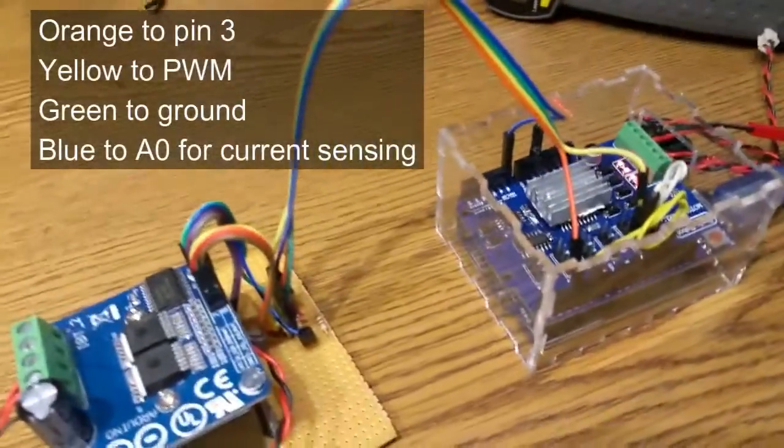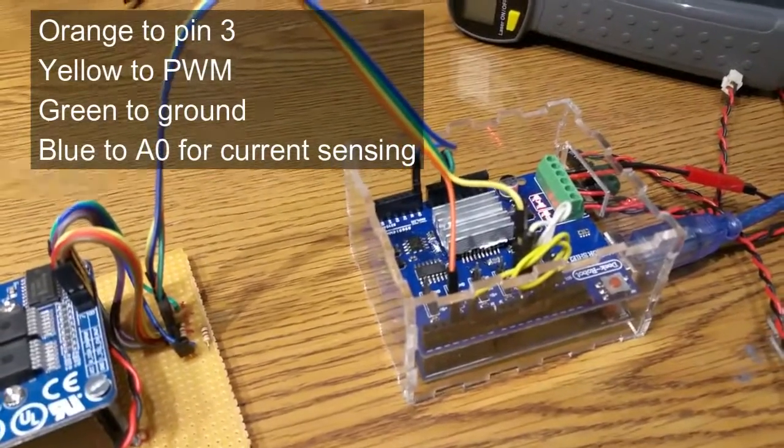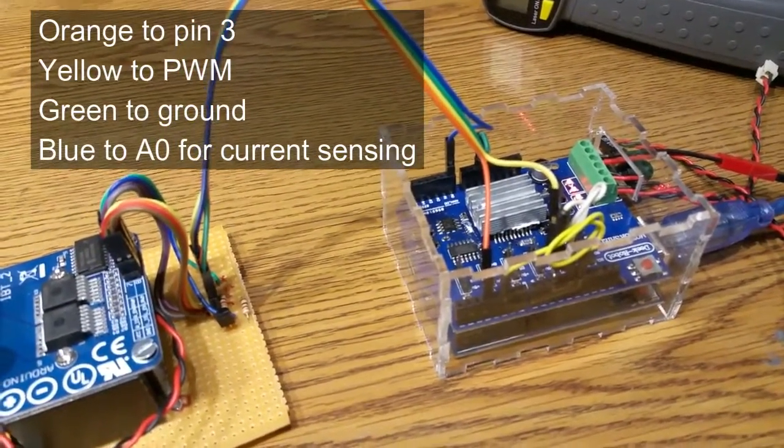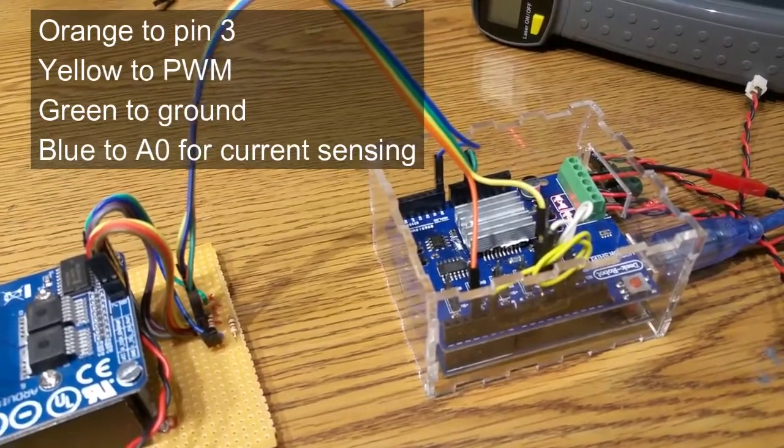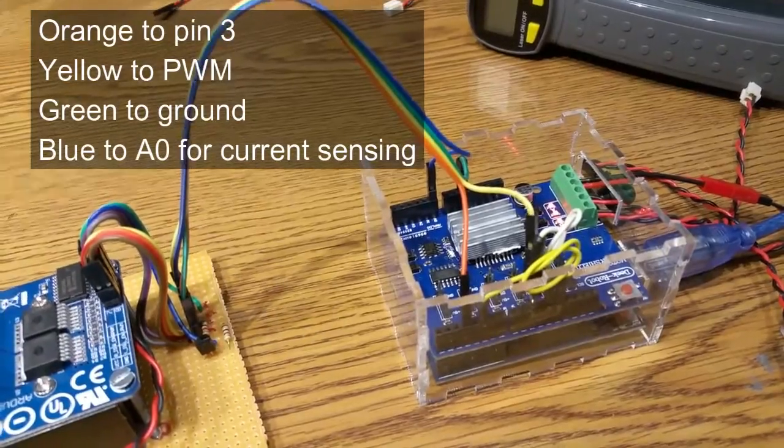There are only four wires connecting the H-bridge with the DCC++ controller. One of them goes to pin three which supplies power so that you can turn the power on and off from JMRI. One of them goes to the PWM output.